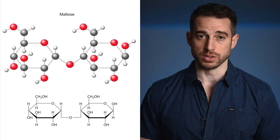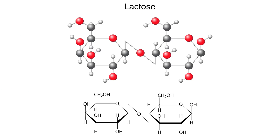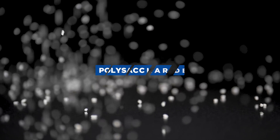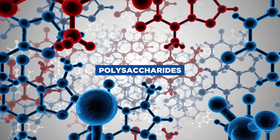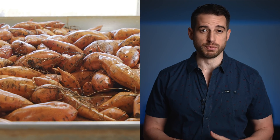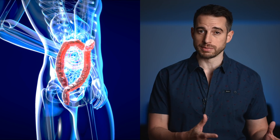Other disaccharides include maltose, which is two glucose molecules fused together, and lactose, which is glucose and galactose fused together. Individual sugar units can combine into much more complex, often branched structures called polysaccharides, which typically consist of hundreds or even thousands of glucose molecules fused together. These carbohydrates are found in grains and vegetables and can be broadly categorized into digestible and indigestible types.